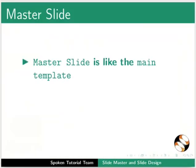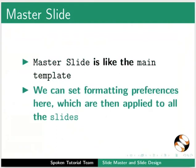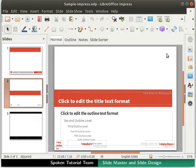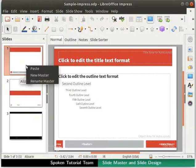Master slide is like the main template. We can set formatting preferences here which are then applied to all the slides. First, let's learn how to change the background of this presentation. Right-click on slide 1 in the slides pane and from the context menu, click on the New Master option.